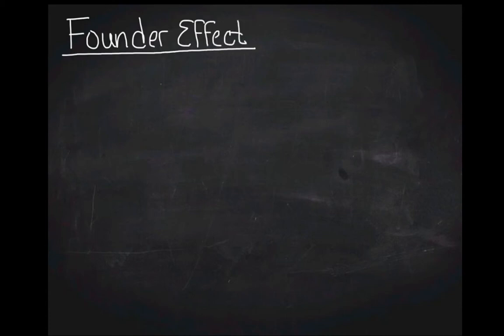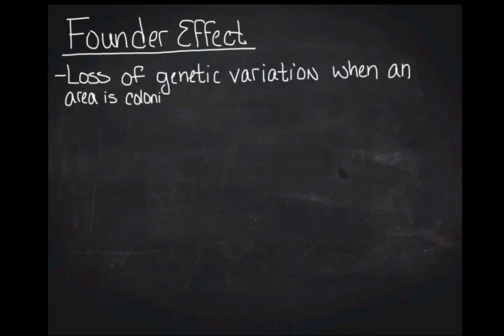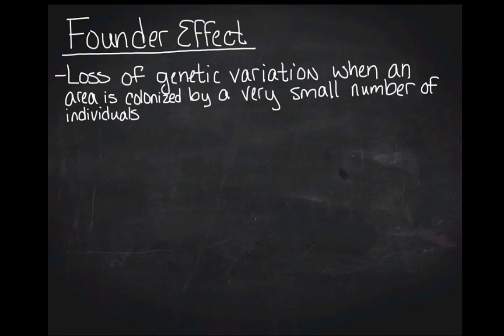So the second thing that we need to talk about is the founder effect. So founder effect is kind of what we talked about already with some of the historical biogeography. So with founder effect, what you're going to have is you're going to have loss of genetic variation when an area is colonized by a very small number of individuals. And so that's basically, you're going to get that historical biogeography pattern that we always see. But the allele frequencies on those islands are going to vary based on what actually colonizes the island.